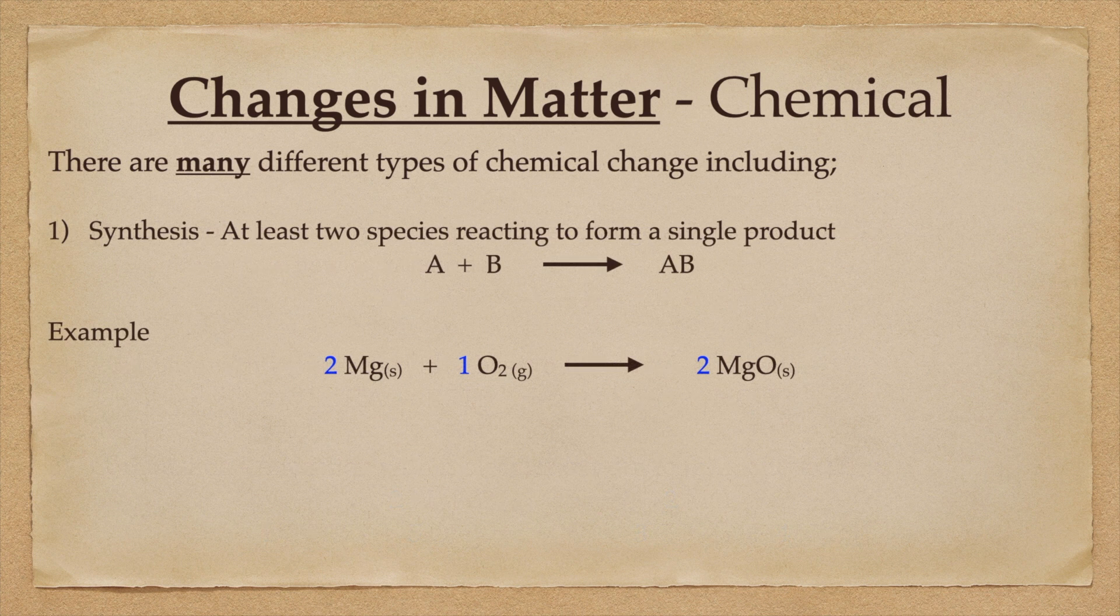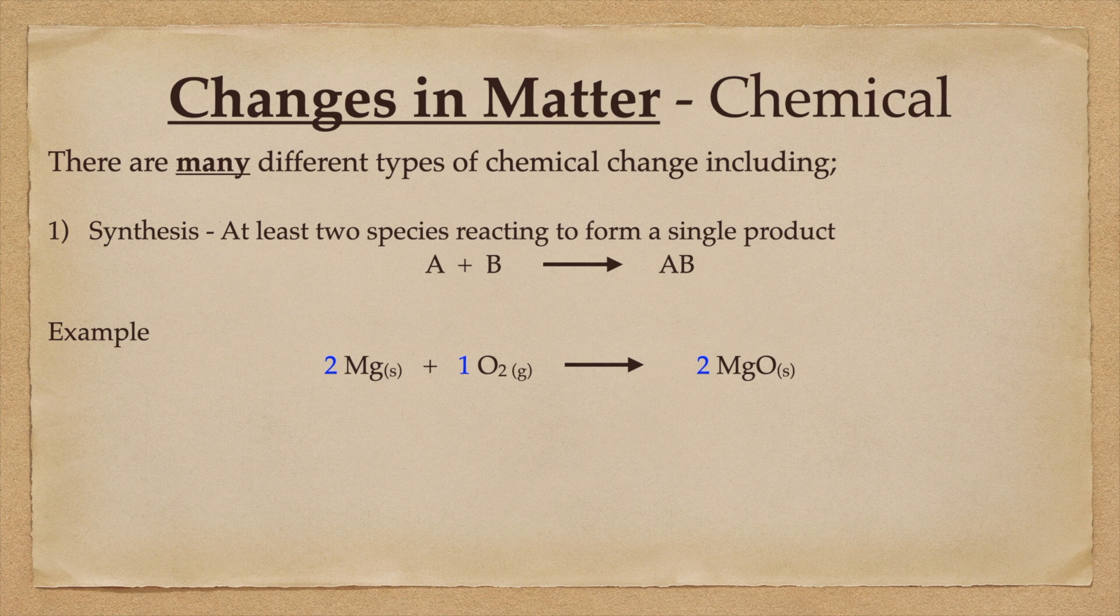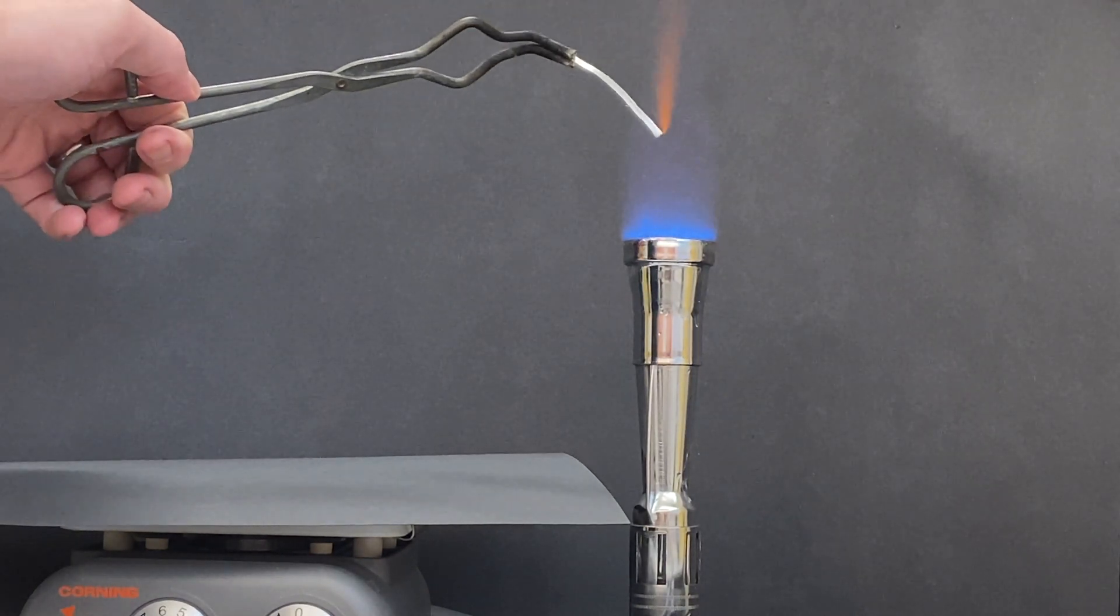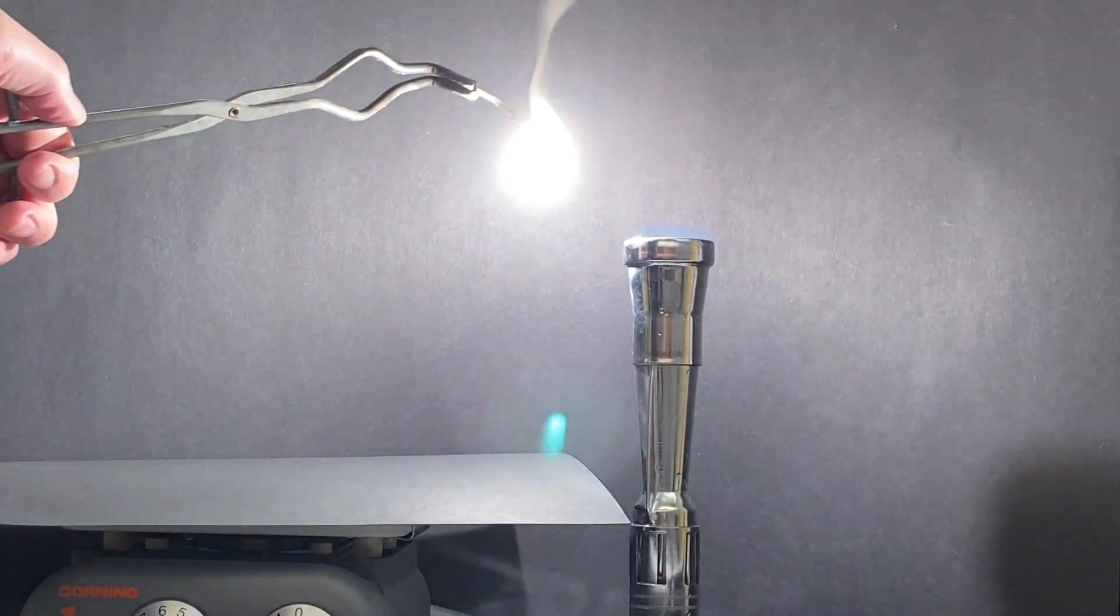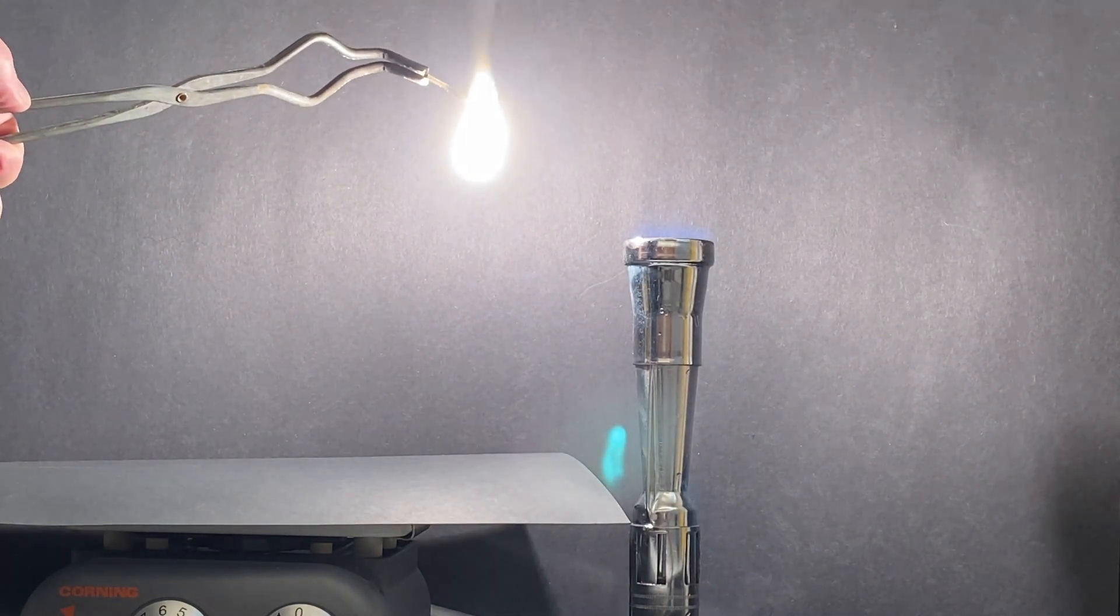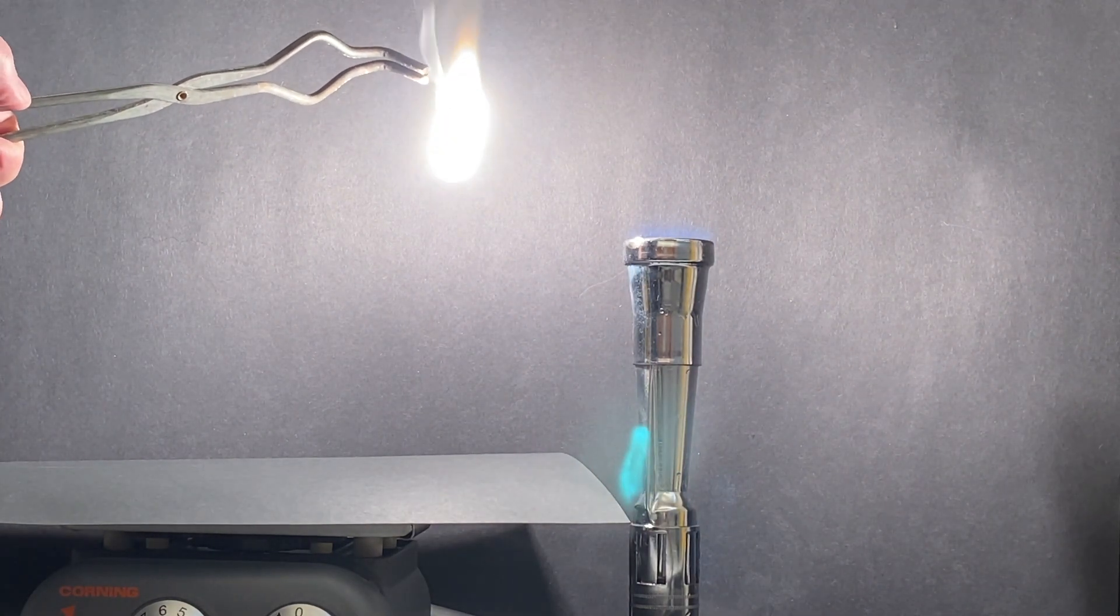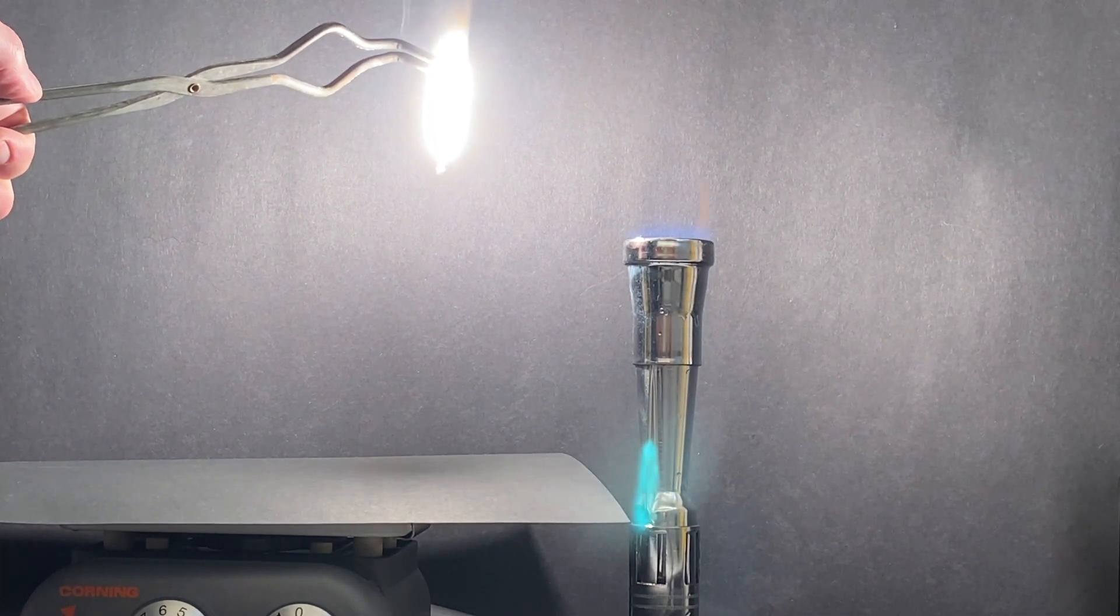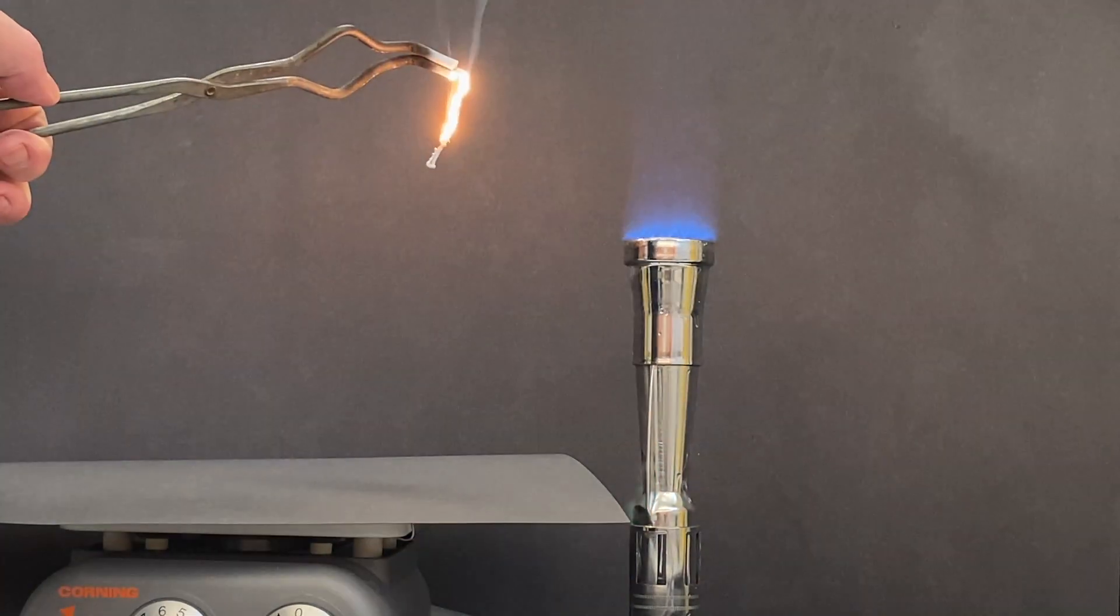The first category is synthesis, that is two species reacting together to make a single species. In this case we'll take two species in the elemental form, solid metallic magnesium and gaseous oxygen. They're going to react together to form solid magnesium oxide. This is both a synthesis and a metallic combustion reaction at the same time. It qualifies as both.